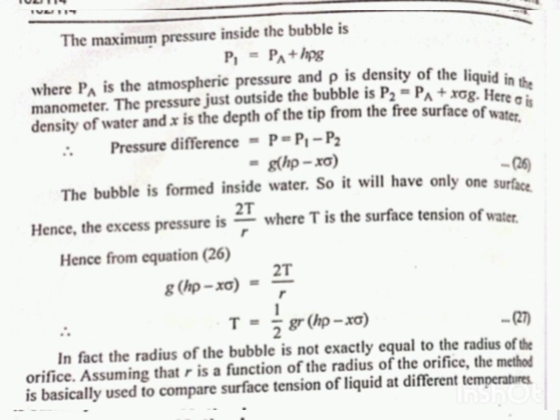So by equating these two, we can get the surface tension equation: T equals one-half g R times (H rho minus sigma X).